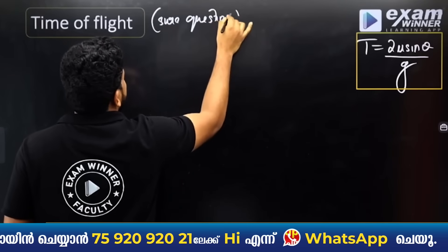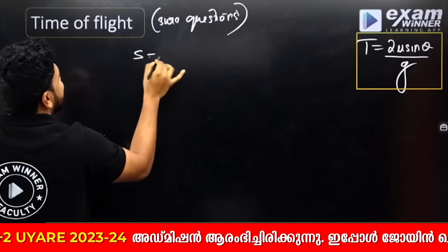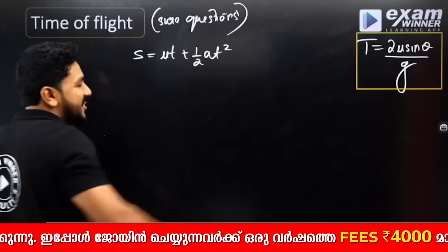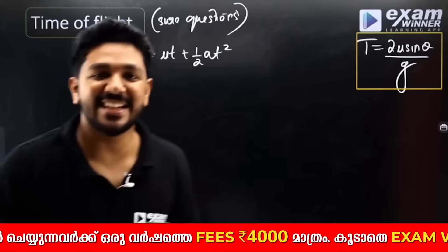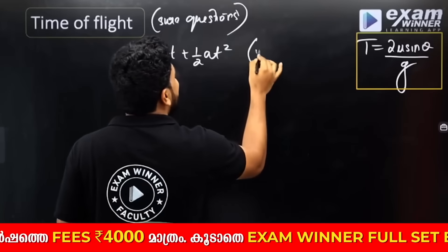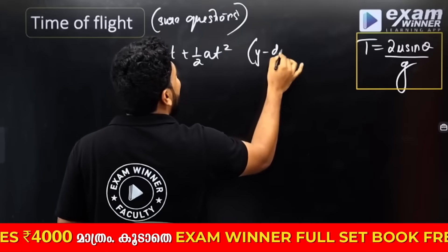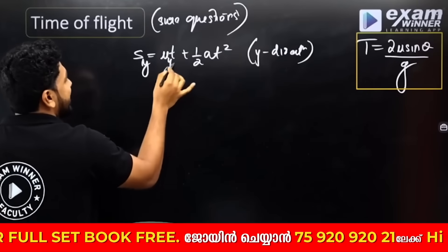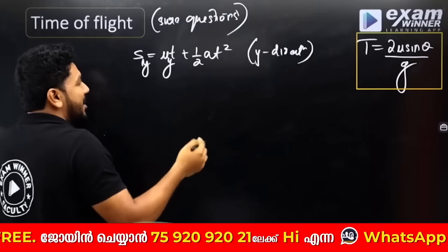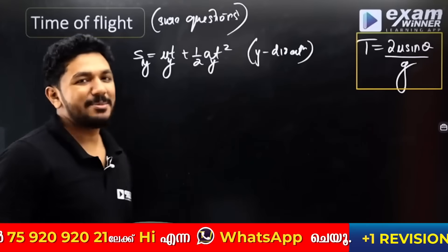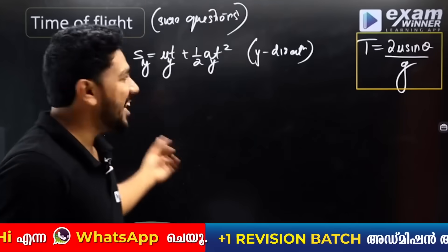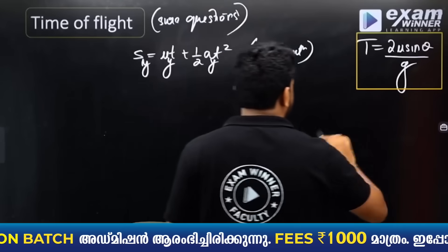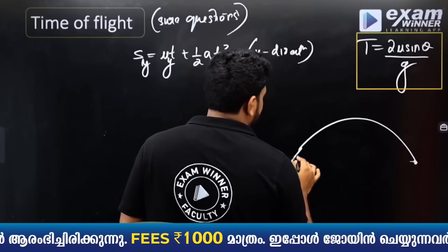Okay, pretty good. The formula: s is equal to ut plus ½at². This is from motion in a straight line. Now, we are applying this in the y-direction.